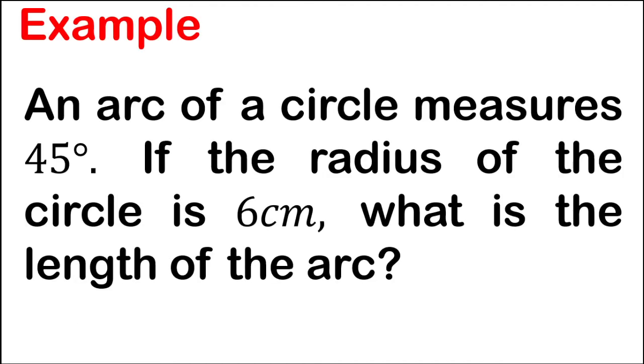So let's start. Example, an arc of a circle measures 45 degrees. If the radius of the circle is 6 centimeters, what is the length of the arc? So let's start with the given. In the given information, we have an arc measures 45 degrees. So this is the degree measure of an arc, which is represented by big letter A. And we also have the radius of the given circle, which is 6 centimeters.